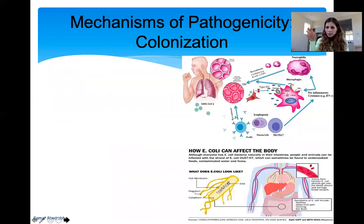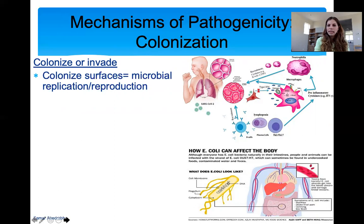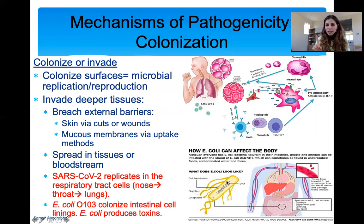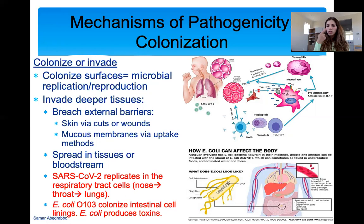After the microbe adheres, it needs to make copies of itself — that's what colonization means. The pathogen needs to replicate and reproduce. If it doesn't, think about it: one virus or one bacteria cannot harm you given how large you are. In order to harm you, it needs to make a lot of copies. If microbes cannot make more copies, they cannot be pathogenic. SARS-CoV-2 is able to efficiently replicate in respiratory tract cells — nose, throat, and lung cells. E. coli colonizes intestinal cells. If both the virus and bacteria did not colonize, there would be no infection.